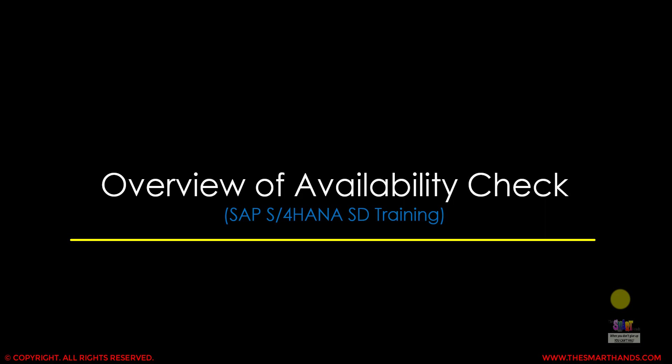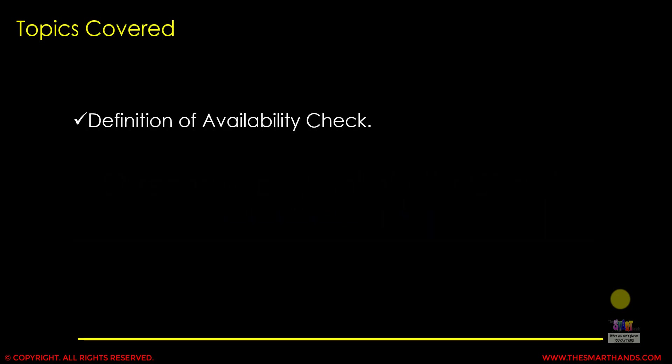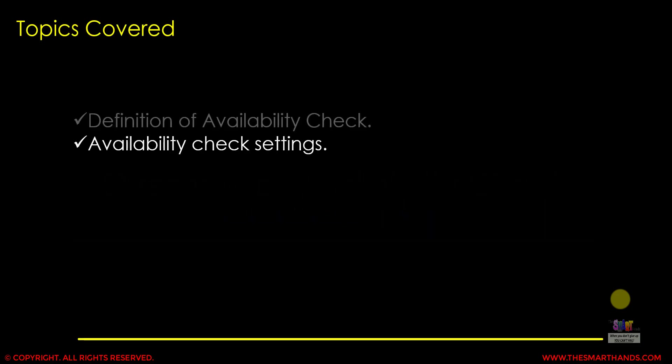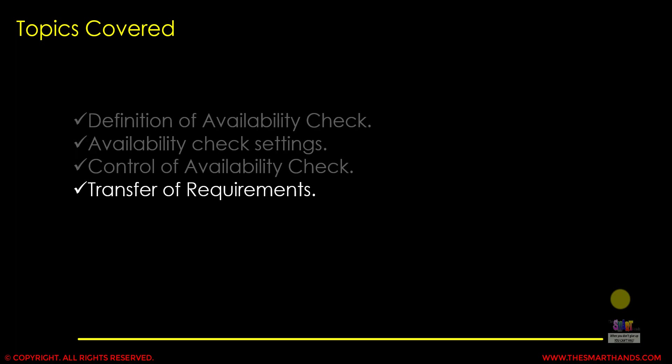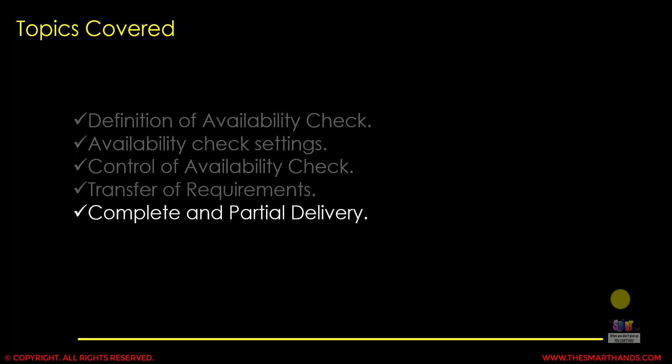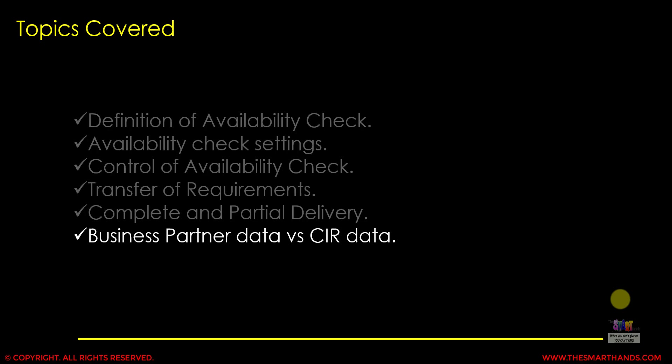The topics we'll be learning in this video are: the meaning of availability check, the different settings we need for availability check, control of availability check, and transfer of requirements. We'll also talk about the influence of complete and partial delivery settings maintained in the business partner, and the difference between data maintained in the business partner and the CIR record.